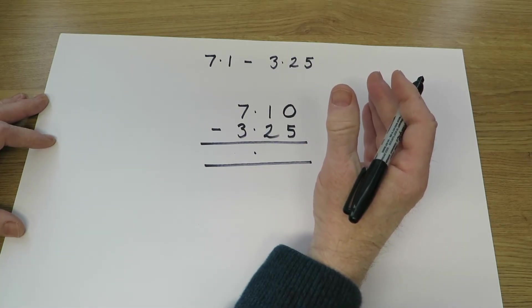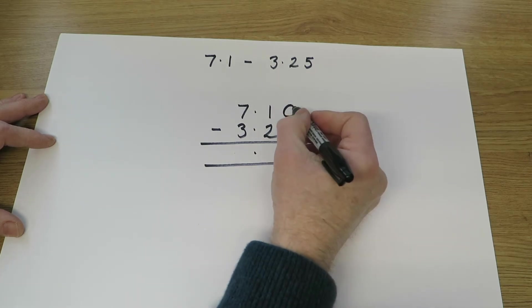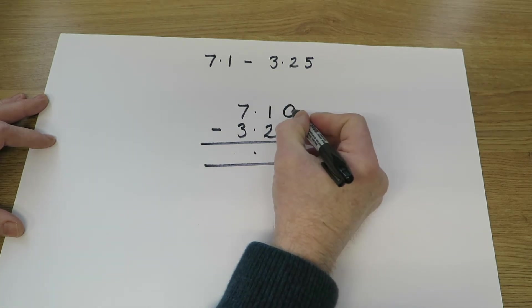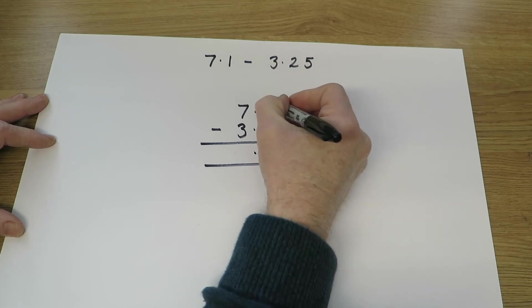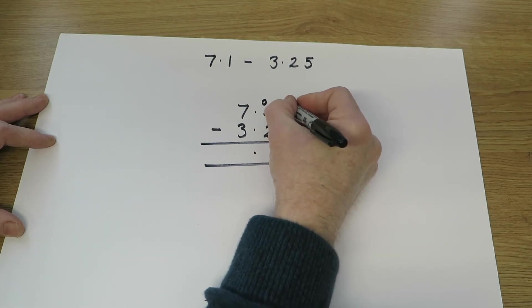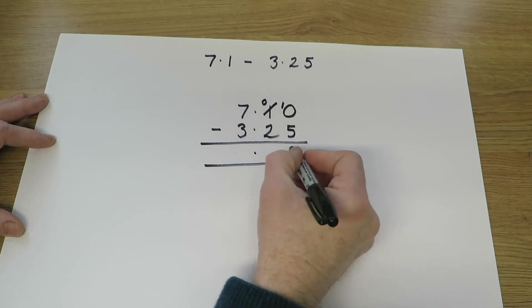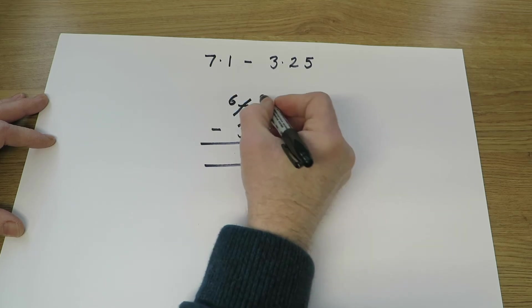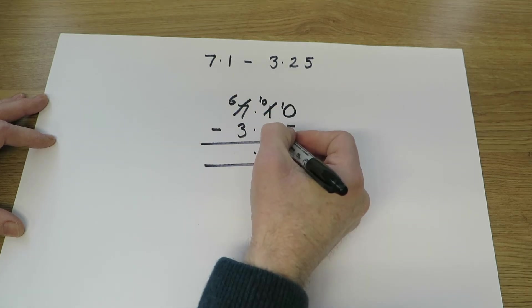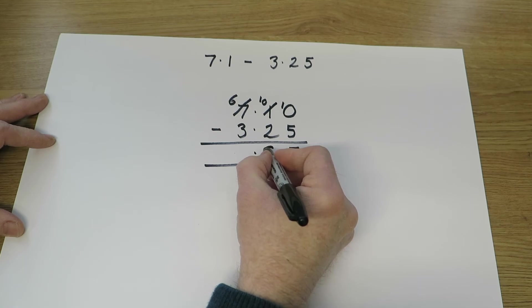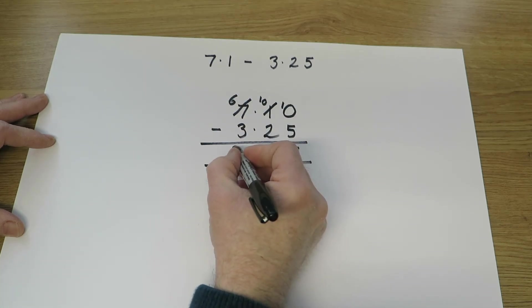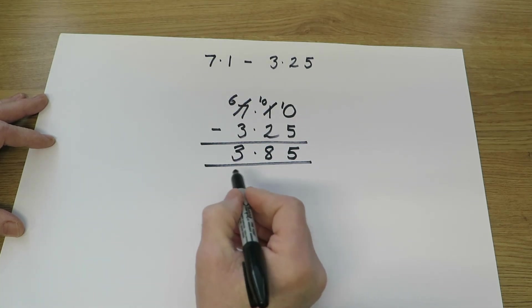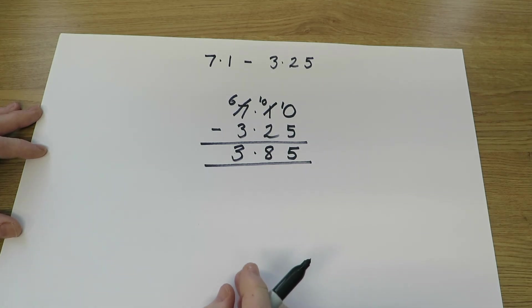We always start at the right-hand side, starting at the hundredths. 0 take away 5. We haven't got enough hundredths to take away 5. So we'll use that tenth and leave no tenths, but give ourselves 10 hundredths. 10 take away 5 is 5. 0 tenths take away 2 tenths. We'll use one of the units to give us 10 extra tenths. 10 take away 2 is 8. 6 units take 3 units is 3 units. Final answer, 3.85.